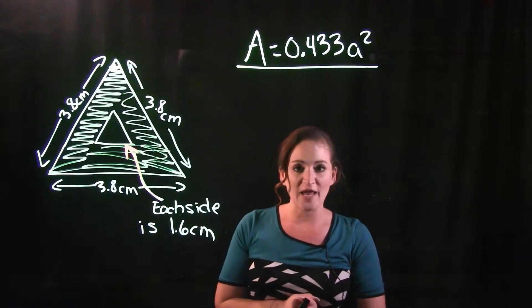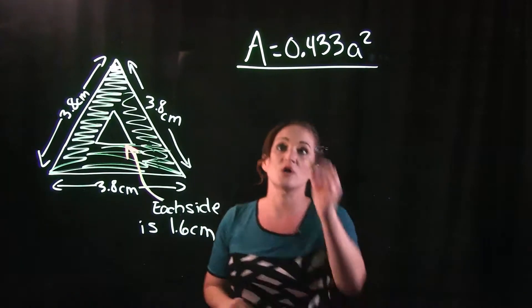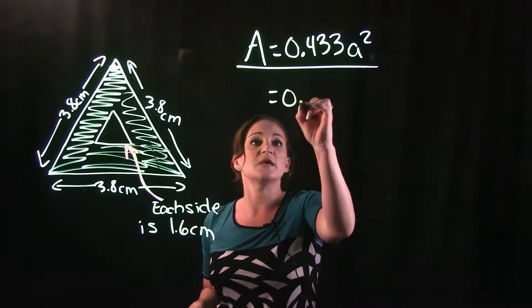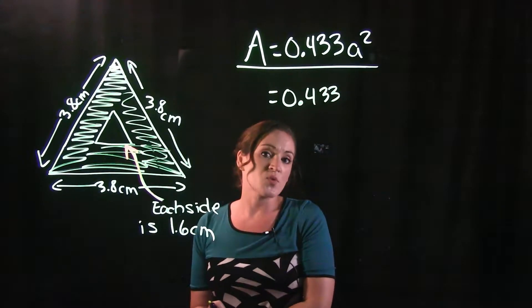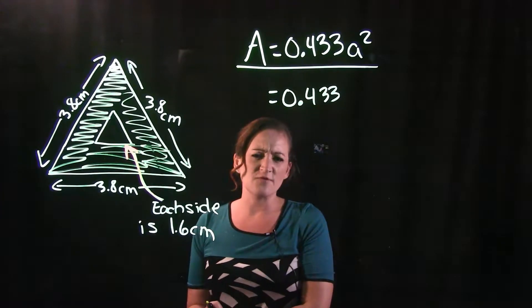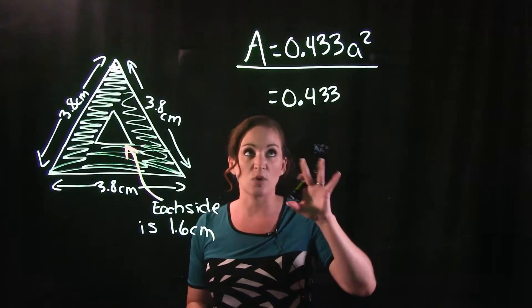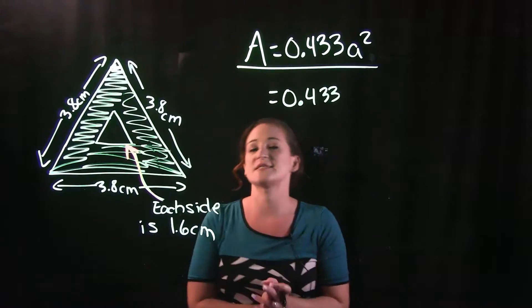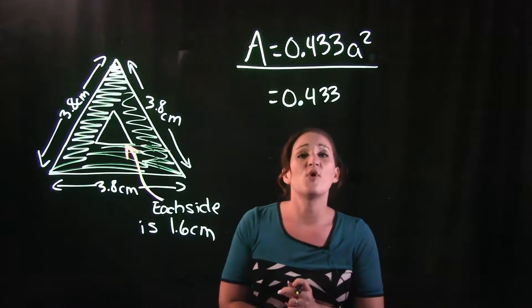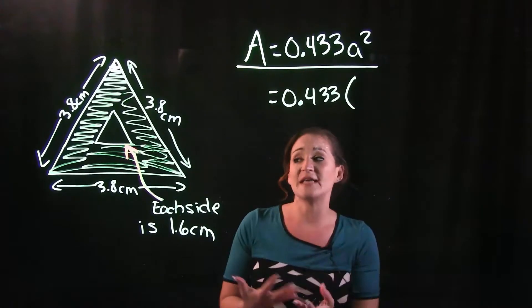step one, find the area of the big triangle. I'm going to use this formula here, and 0.433 is part of the formula. Otherwise, you might see a variation of this formula. It's square root of 3 divided by 4 times a squared. It's the same thing. Otherwise, 0.433 times a squared.